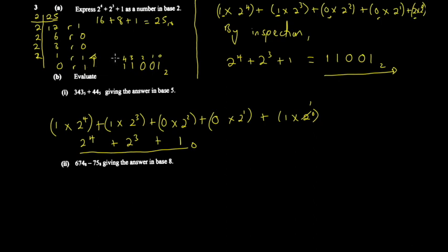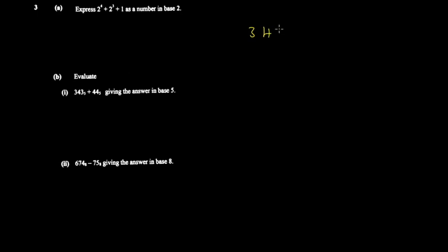Extra steps make you more vulnerable to errors. If you don't understand the second method, just use the longer one — it's still fine. But if you understand the inspection method, use it because it's faster. Now for the next part: evaluate 343 base 5 plus 44 base 5.